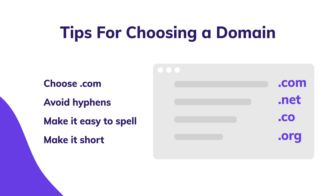Next tip: make it easy to pronounce and spell. This one is quite important. Let's say somebody finds your website and thinks it looks awesome — they'd like to let their friends know about it. If your domain name is difficult to pronounce and spell, that person is going to have a tough time spreading the word. And the last tip would be to avoid hyphens. Most domain names are already taken, and people tend to use hyphens between words, but avoid that — you don't want your domain name to look sketchy or spammy.